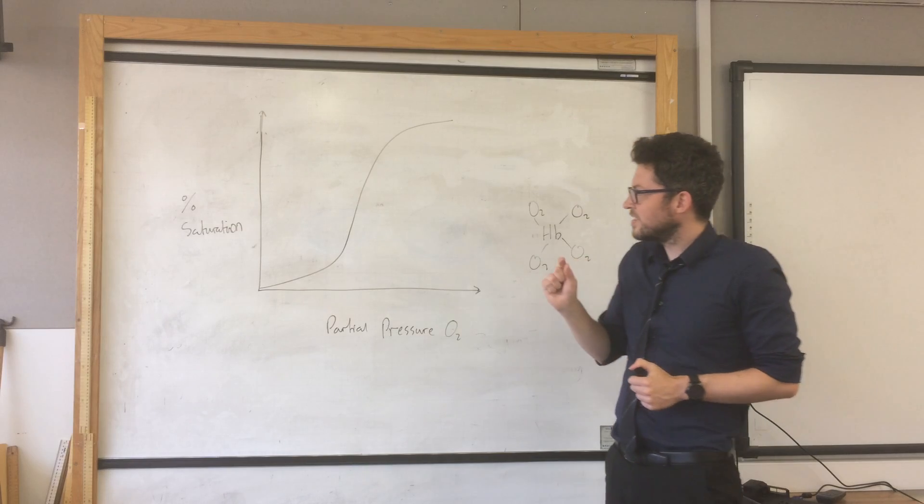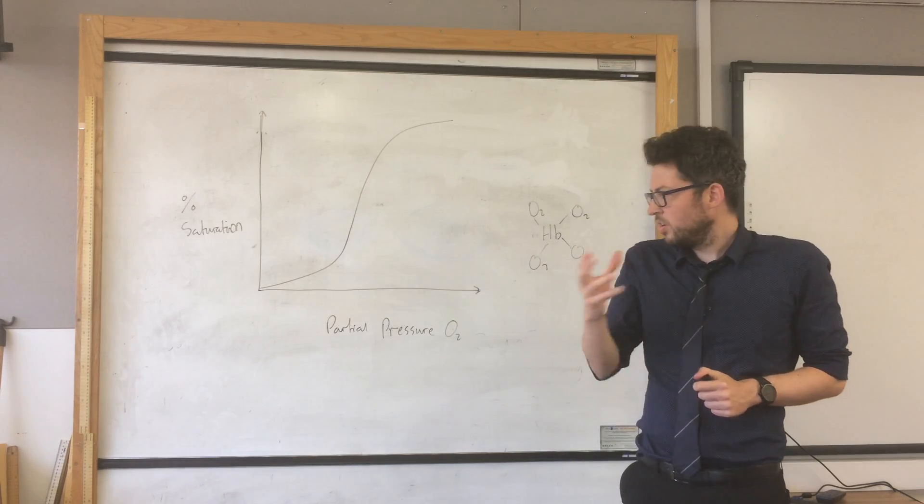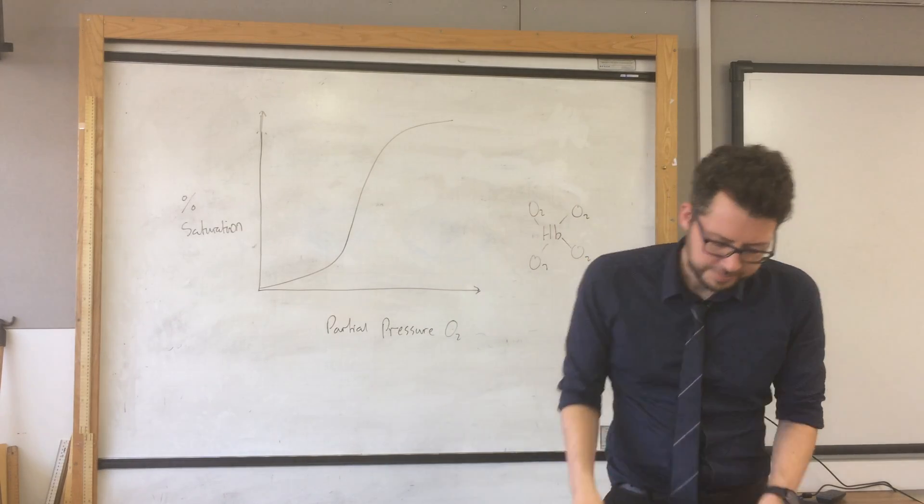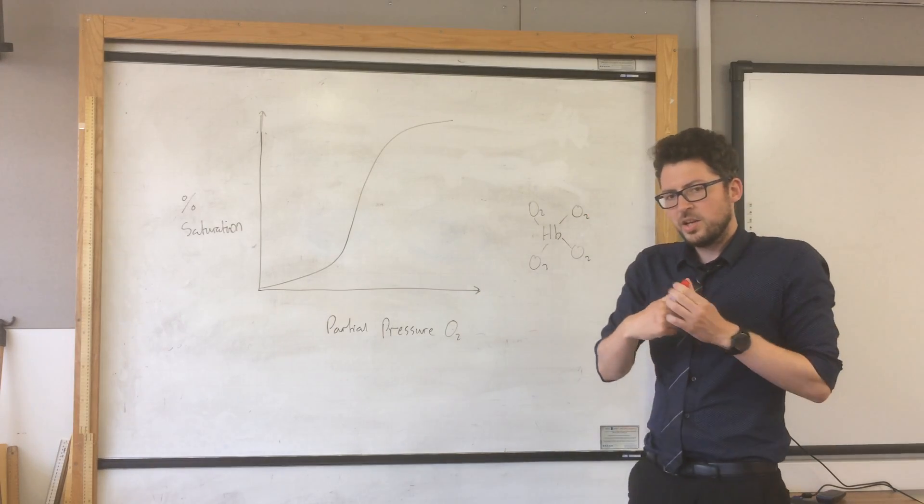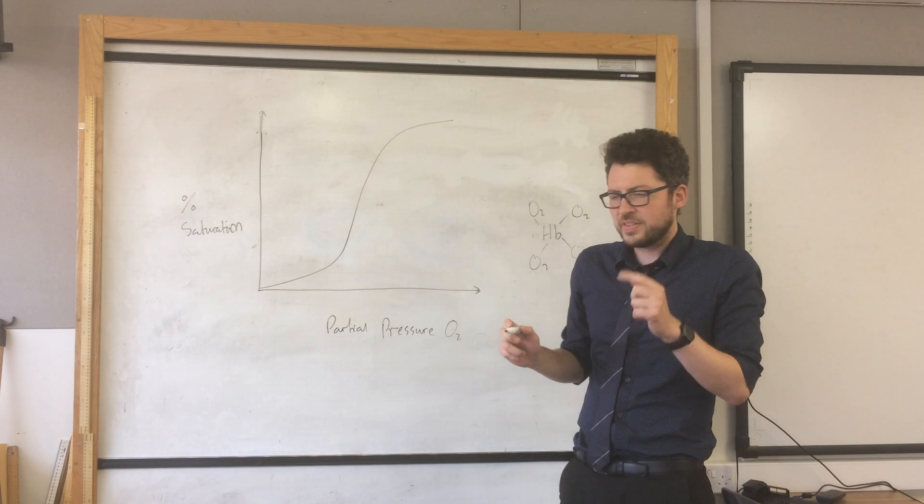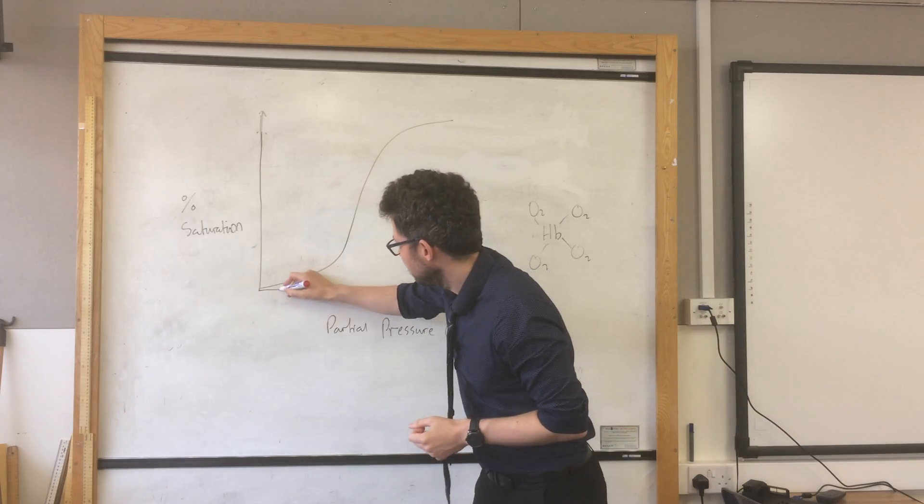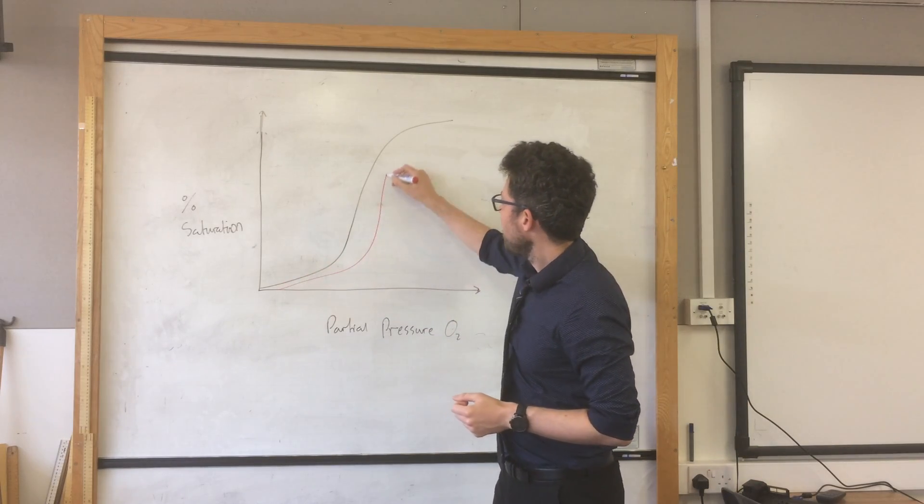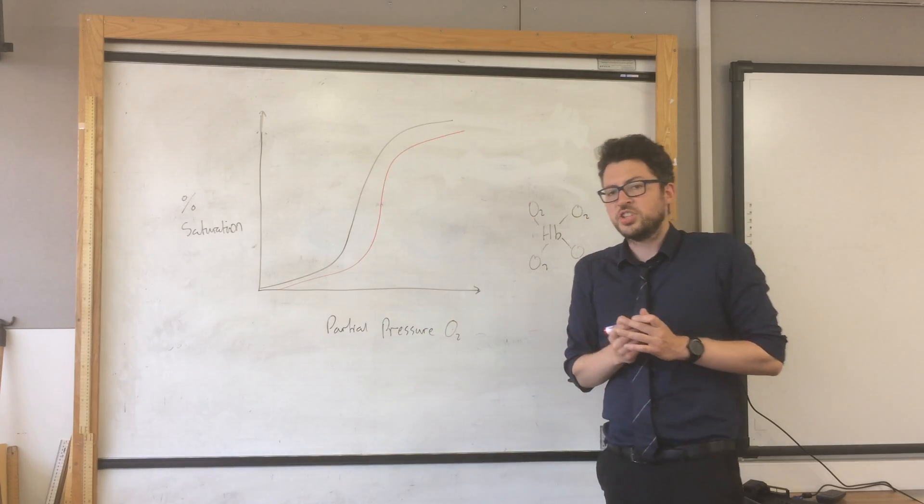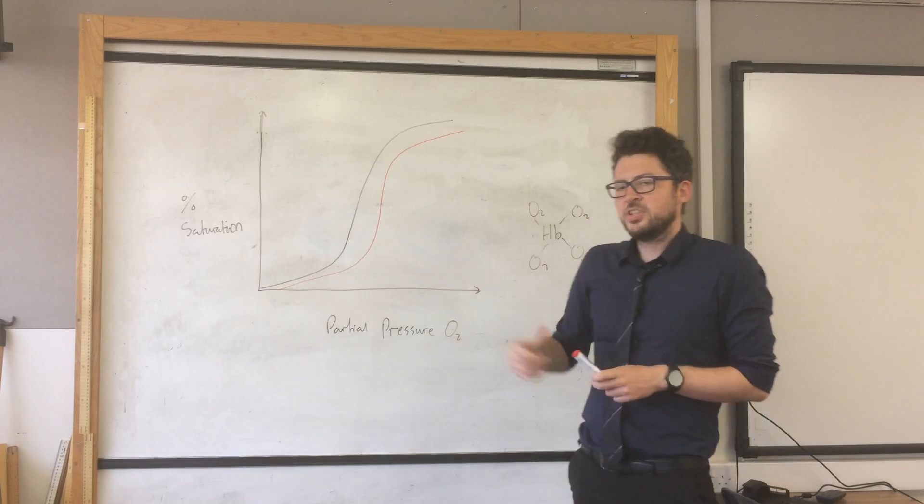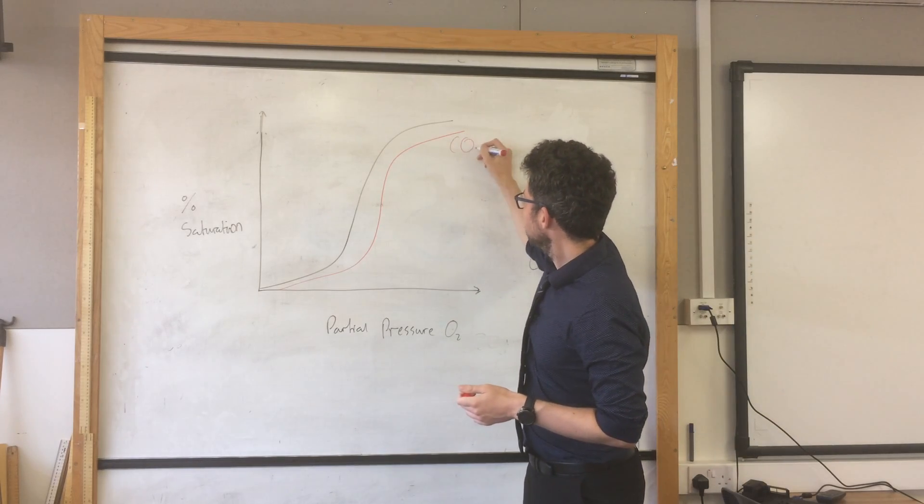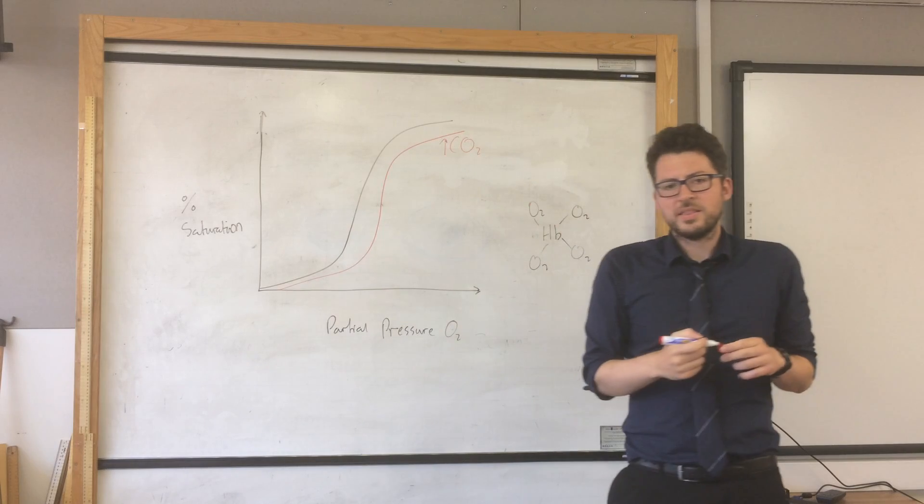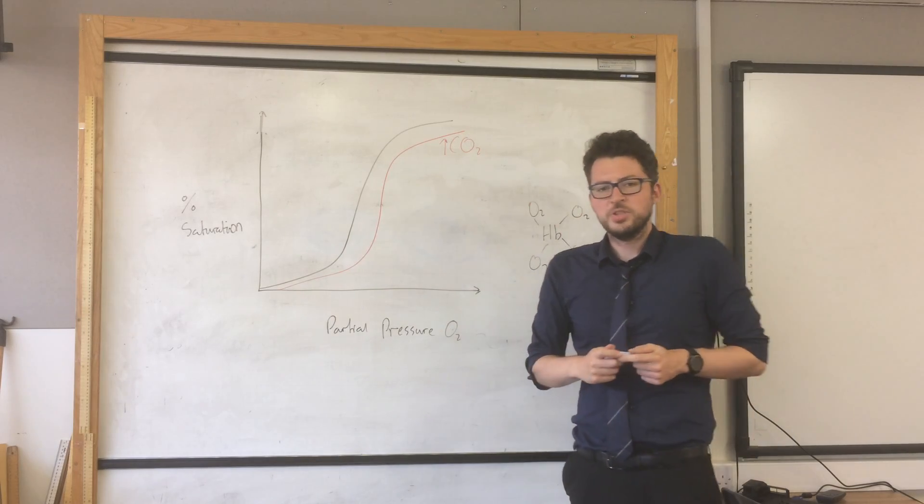Now we need to know the effect of a couple of things on this curve. Now, if carbon dioxide levels increase, what we get is the curve shifting slightly to the right. Now this is called the Bohr shift, but I prefer to know it as the fun shift. So that is with the presence of higher levels of CO2.